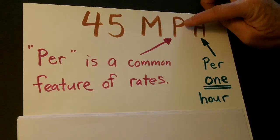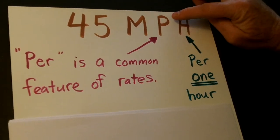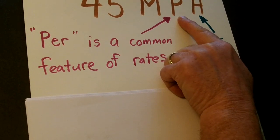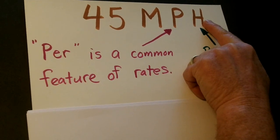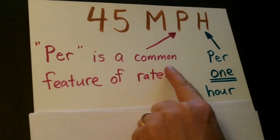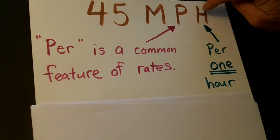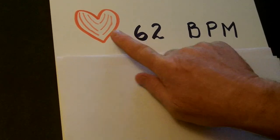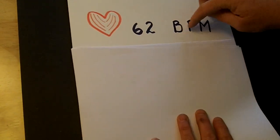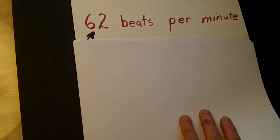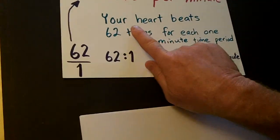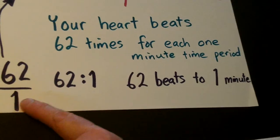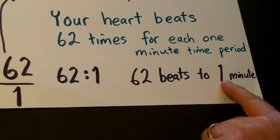We need to get used to the word "per," which is abbreviated as P in many standard rates. In 45 MPH, that P in the middle always stands for per. Per is a common feature of rates — per one hour. Similarly, 62 beats per minute: the P stands for per. Your heart beats 62 times for each one-minute time period. Written as a ratio, that's 62 to 1, or 62 beats to one minute.